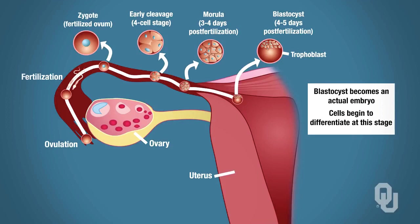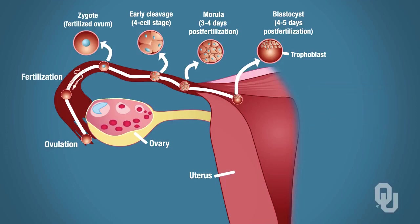What I mean by the cells beginning to differentiate is that they're now committed to becoming certain types of tissues—maybe neural tissue, or maybe muscle tissue, and so on. Then finally, here we have implantation at day six post-fertilization. The trophoblast also plays an important role in implantation.